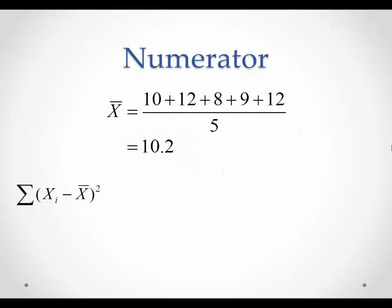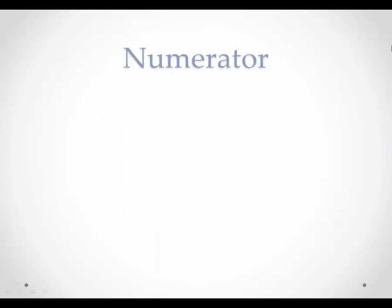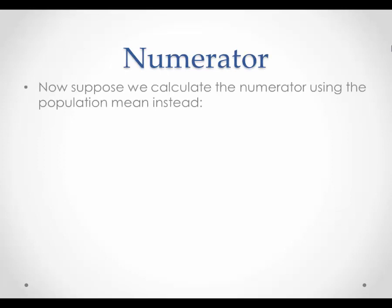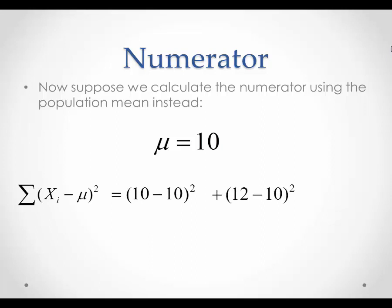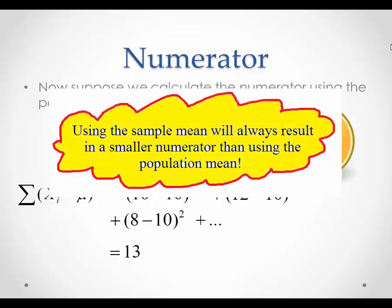Looking at the numerator of the sample variance formula, we get (10 minus 10.2) squared, plus (12 minus 10.2) squared, plus (8 minus 10.2) squared, and so on. Summing these up, we get 12.8. Now suppose we calculate the numerator using the population mean instead. We're told the population mean is equal to 10. So the numerator is equal to (10 minus 10) squared, plus (12 minus 10) squared, plus (8 minus 10) squared, and so on. This gives us an answer of 13.